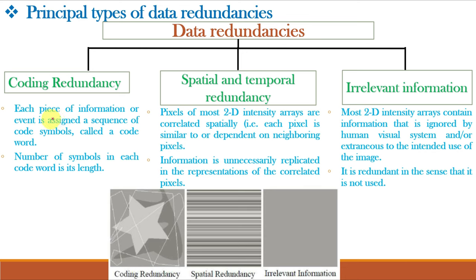A code is a system of symbols — letters, numbers, or bits — used to represent a body of information or set of events. Each piece of information is assigned a sequence of code symbols called a code word, and the number of symbols in each code word is its length. For spatial redundancy, pixels of most 2D intensity arrays are correlated spatially — each pixel is similar to or dependent on neighboring pixels — and information is unnecessarily replicated in correlated pixels. For irrelevant information, most 2D intensity arrays contain information ignored by the human visual system and extraneous to the intended use of the image. Figures shown illustrate coding redundancy, spatial redundancy with repetitive pixels along a horizontal line, and irrelevant information repeated across the whole image.